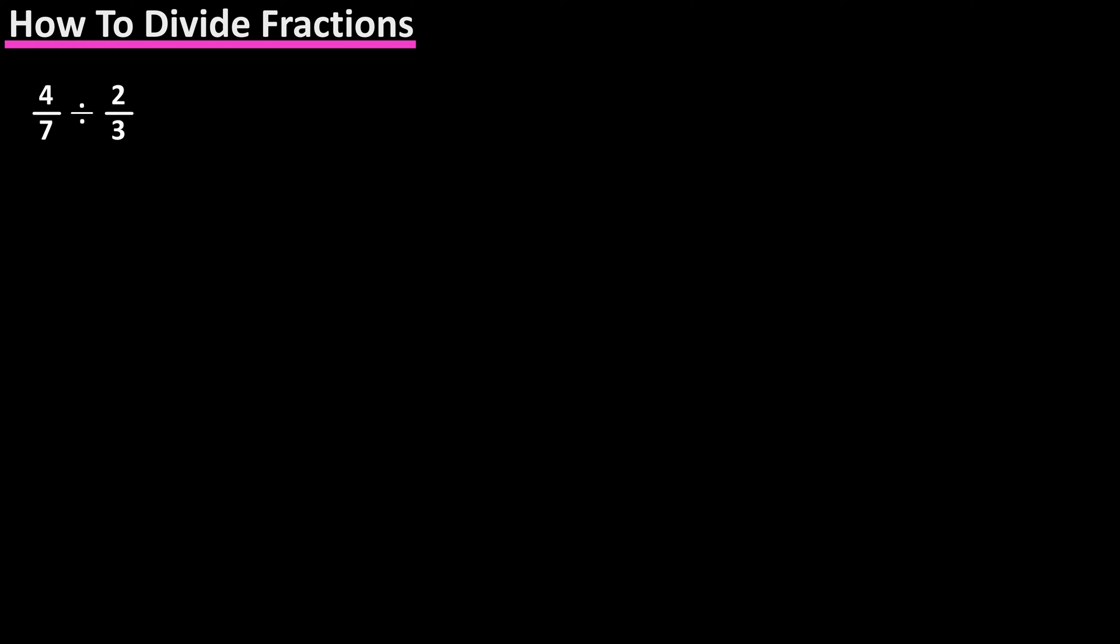In dividing fractions, such as 4 over 7 divided by 2 over 3, we first invert the second fraction, so it becomes 3 over 2, and then we perform multiplication.